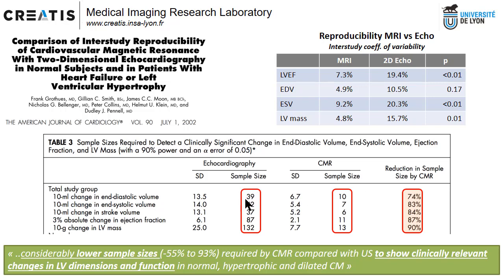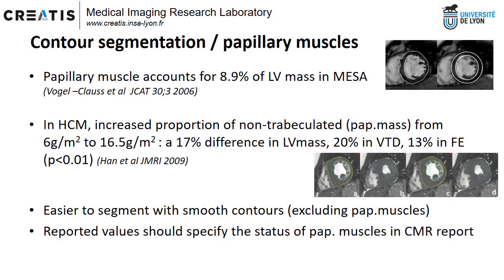For instance, if you want to show a 10 mL change in end-diastolic volume, with ultrasound you require 39 subjects, but with CMR you divide that by 4. If you are interested in mass, it is even better — a 10 times difference, from 132 to 13 subjects — a 90% reduction in sample size. This is a very important take-home message.